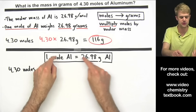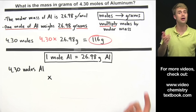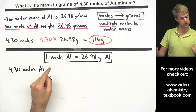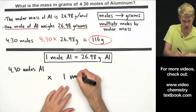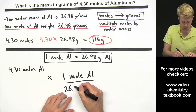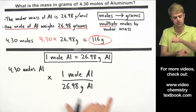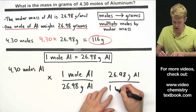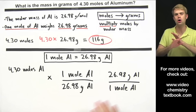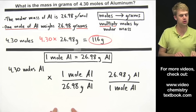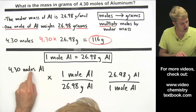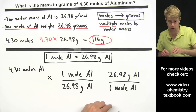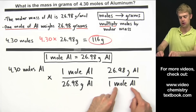We have an equal sign with something on either side, which is perfect for writing a conversion factor. There are two conversion factors we can write: one mole of aluminum over 26.98 grams of aluminum, or flipped — 26.98 grams of aluminum over one mole of aluminum. Both are valid, but we want the one that cancels moles of aluminum, which is on top in our starting value. So moles of aluminum must be on the bottom of the conversion factor — we'll use the second one.